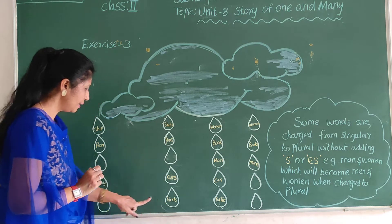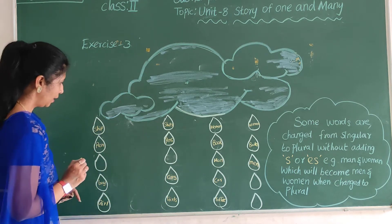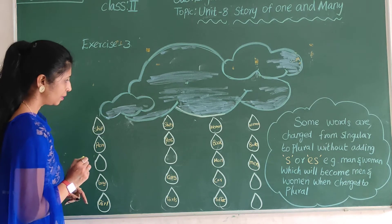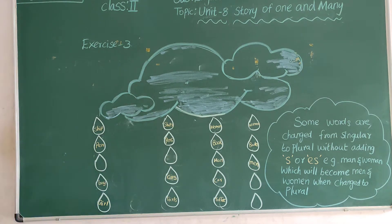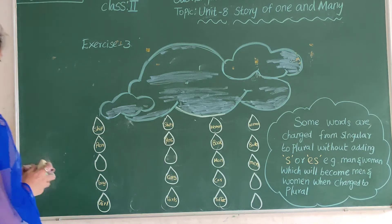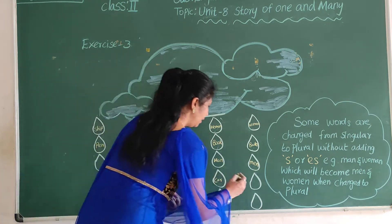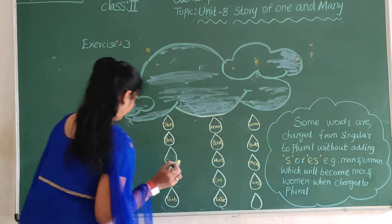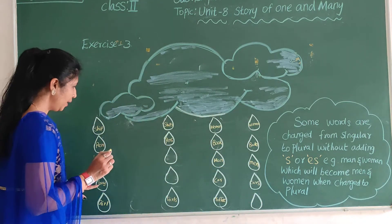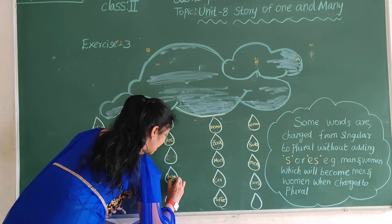Girls, girl — g-i-r-l — girl. Okay, next turn. Cars — c-a-r-s — cars. Boy, boys — b-o-y-s — boys.